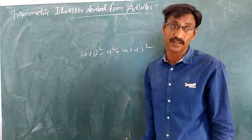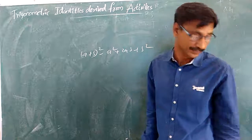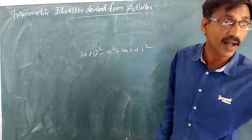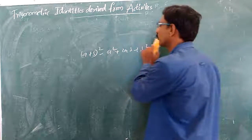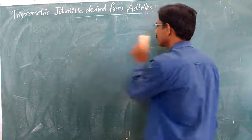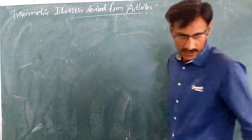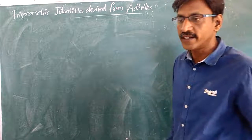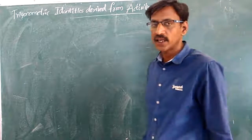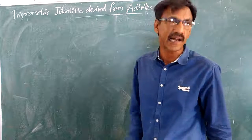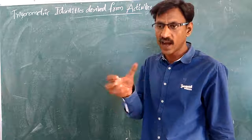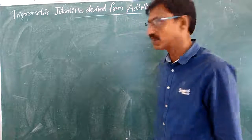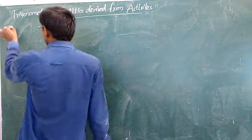Trigonometric identities are not the same as algebraic identities. This is a trigonometric identity. Here are three identities — so a trigonometric identity holds true for all values of the angle theta.